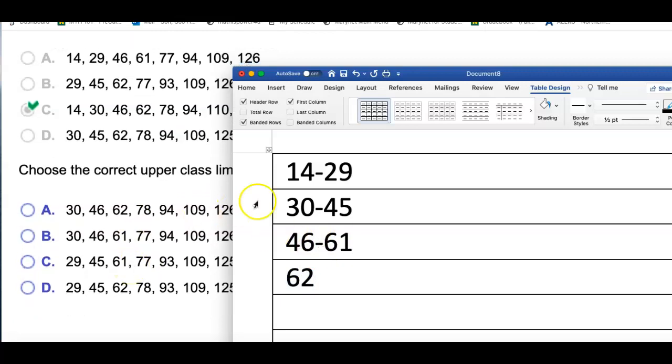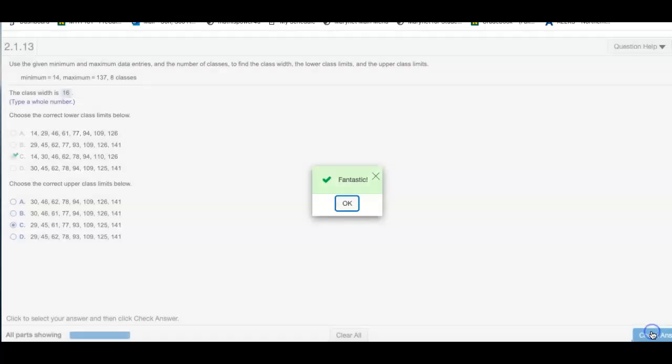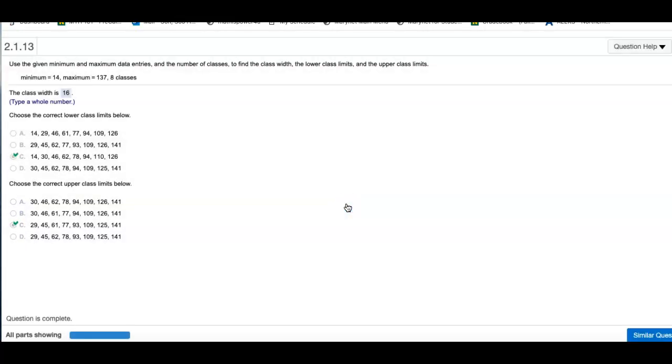Which one of these lists has these numbers: 29, 45, and 61? This looks like it. I'll click this and go ahead and check answer. That is how you do this problem.